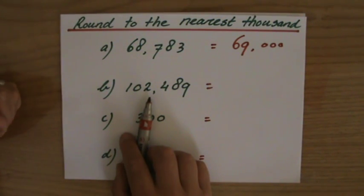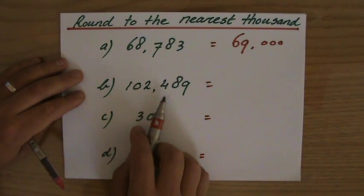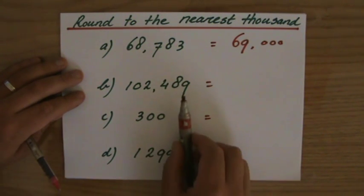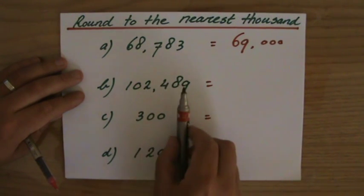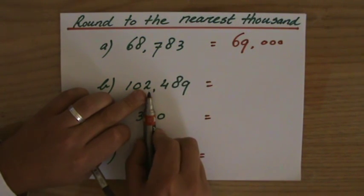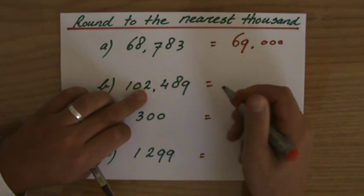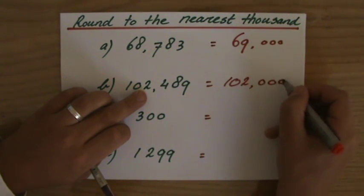102,489. That's a comma, not a decimal point. 102,489. Where are my thousands? Place value. It's over there. Units, tens, hundreds, thousands. It stays a two or it goes up to a three, and it stays a two indeed. So the answer to the nearest thousand is 102,000.